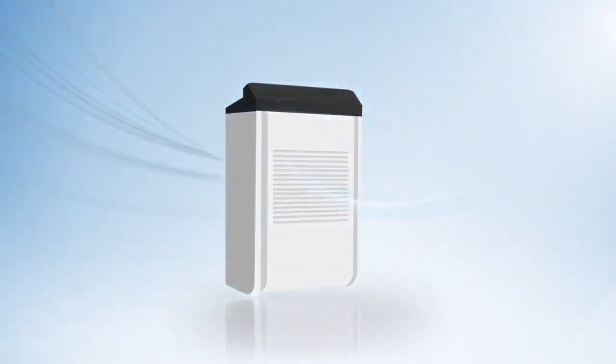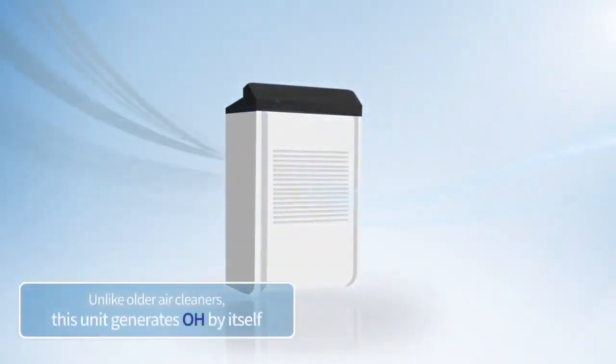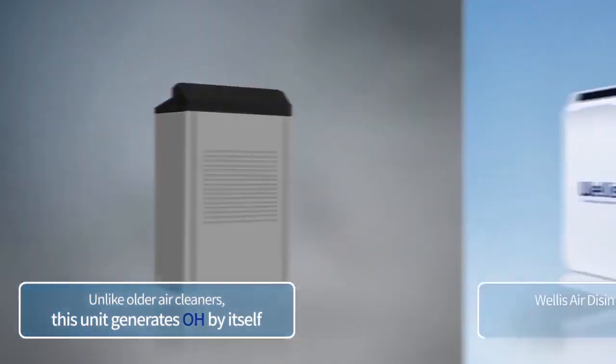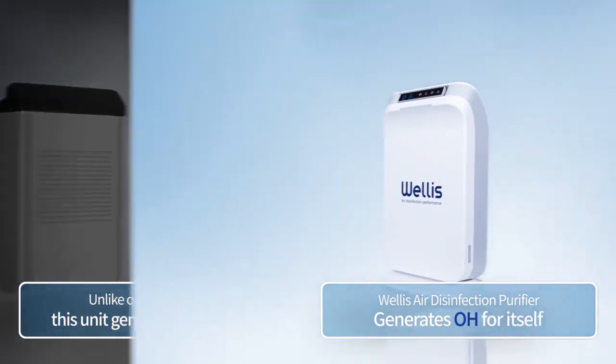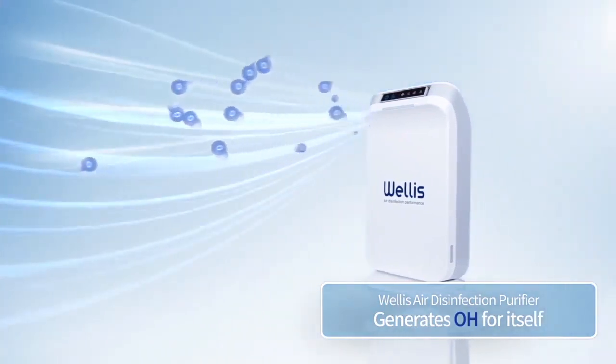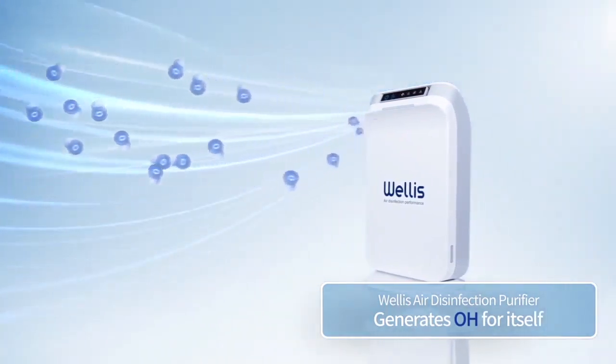While a traditional air cleaner draws in the air to remove contaminants through its filters and then sends filtered air back into the room, the Wellis air disinfection purifier generates OH and emits it into the air, allowing for purification of a far larger area.